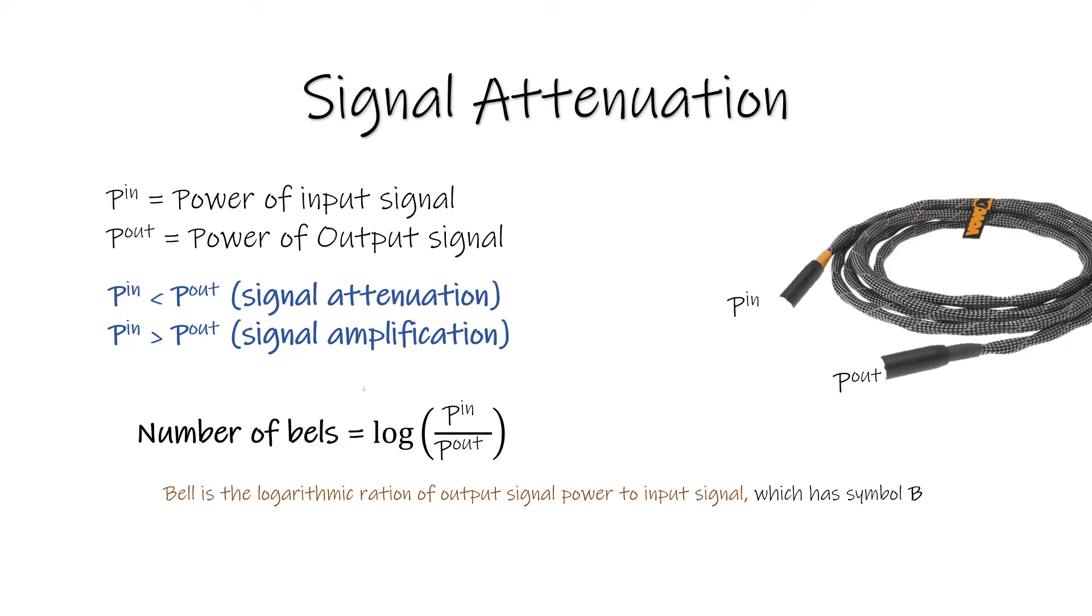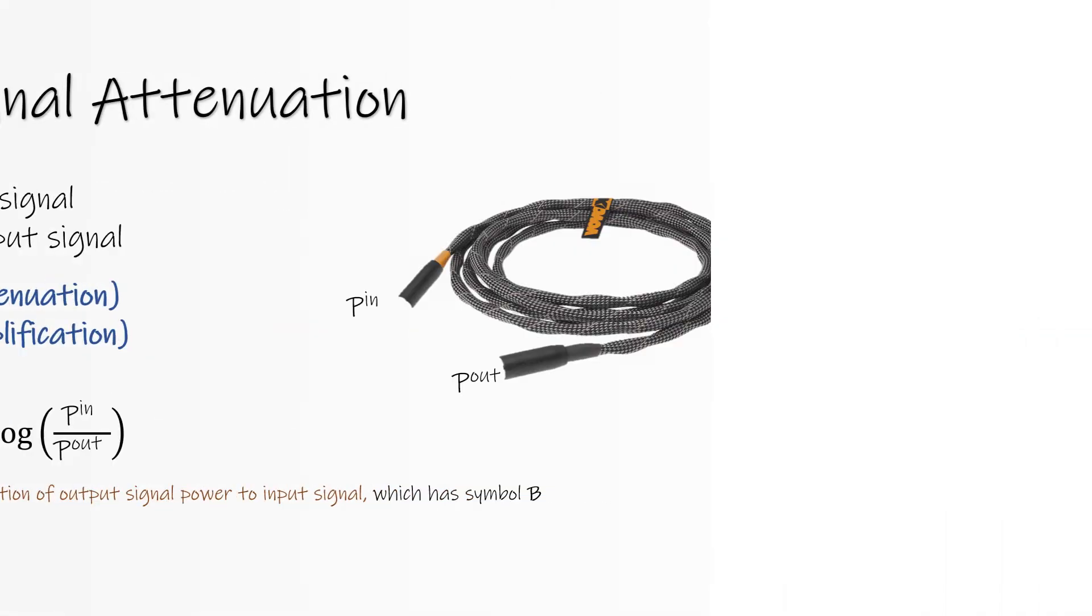Here's one thing you need to know: one bel equals 10 decibels. The number of decibels equals 10 times the log Pin over Pout. When Pout is greater than Pin, decibels will be positive values. When Pout is less than Pin, decibels will be negative values.